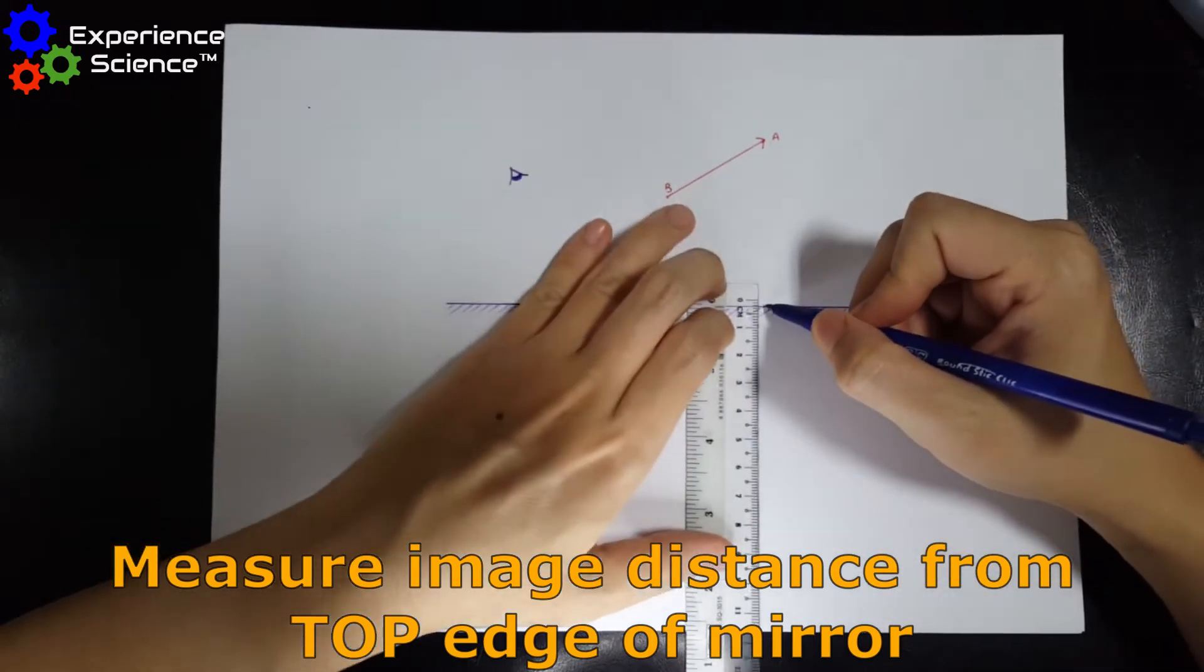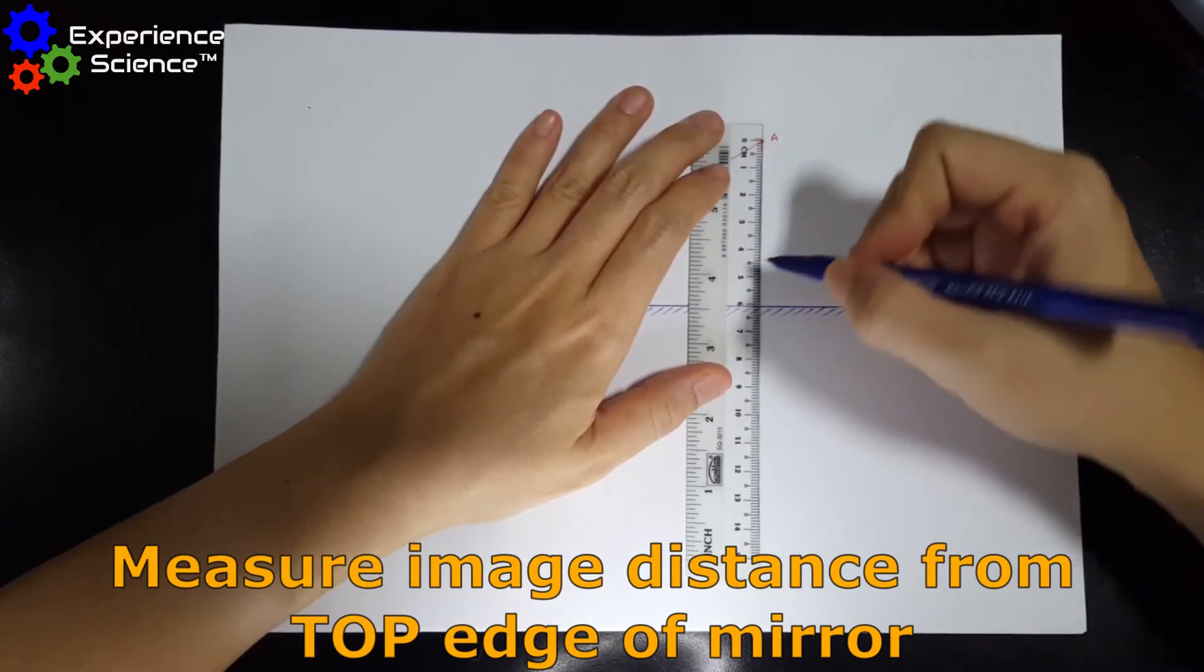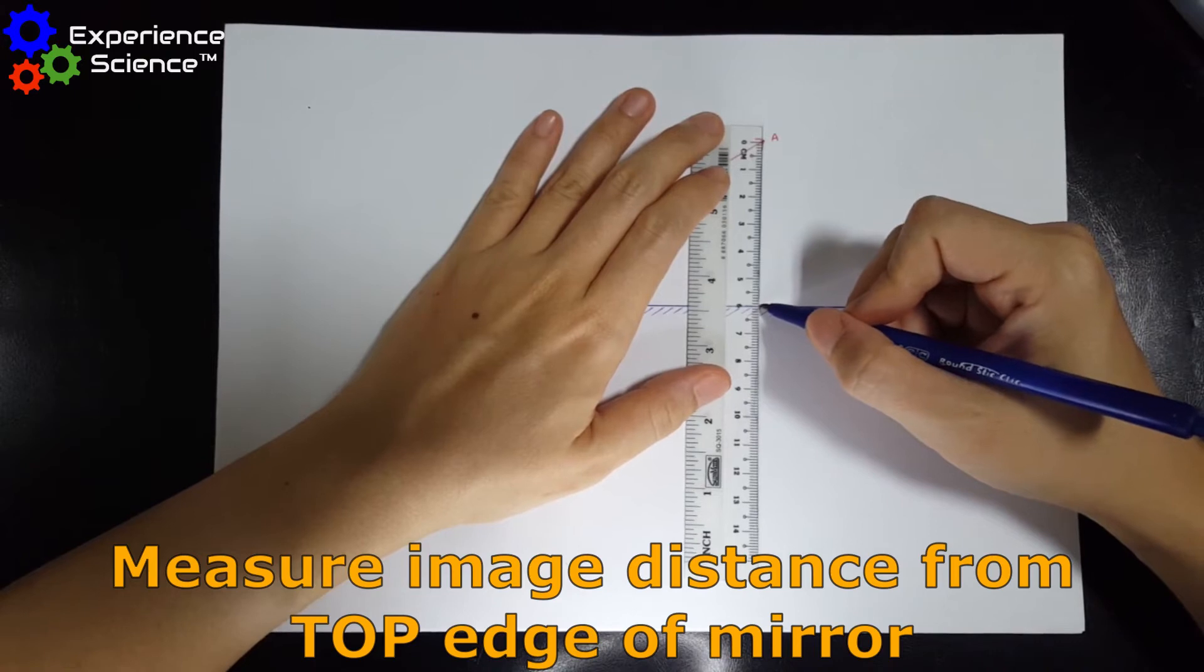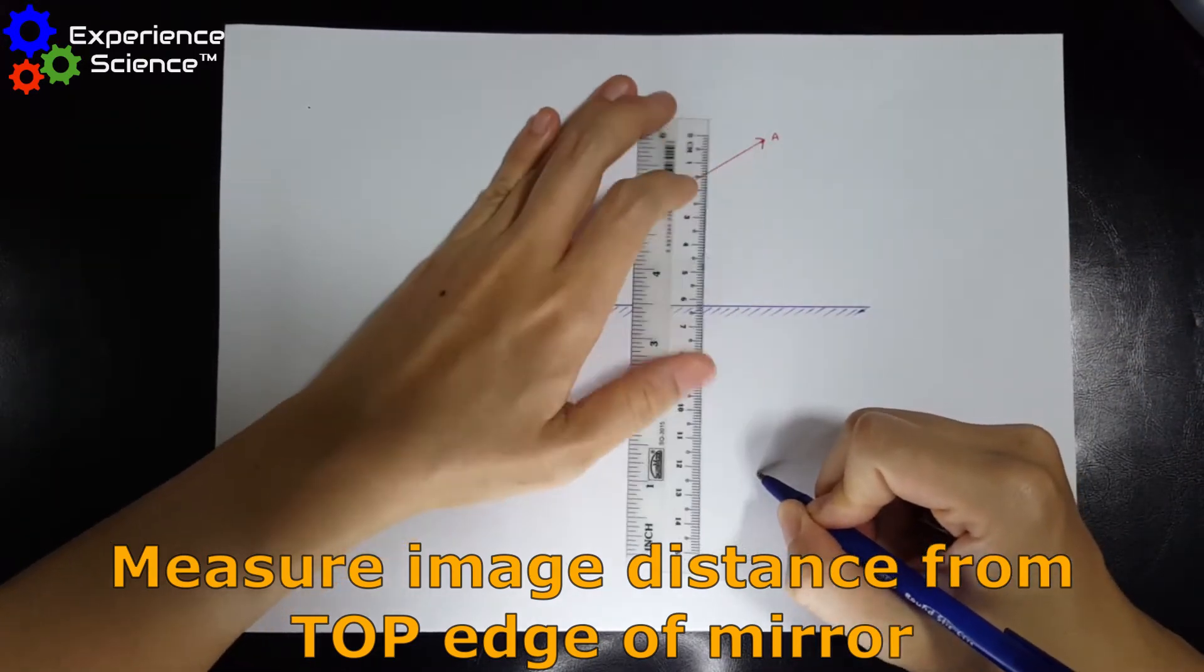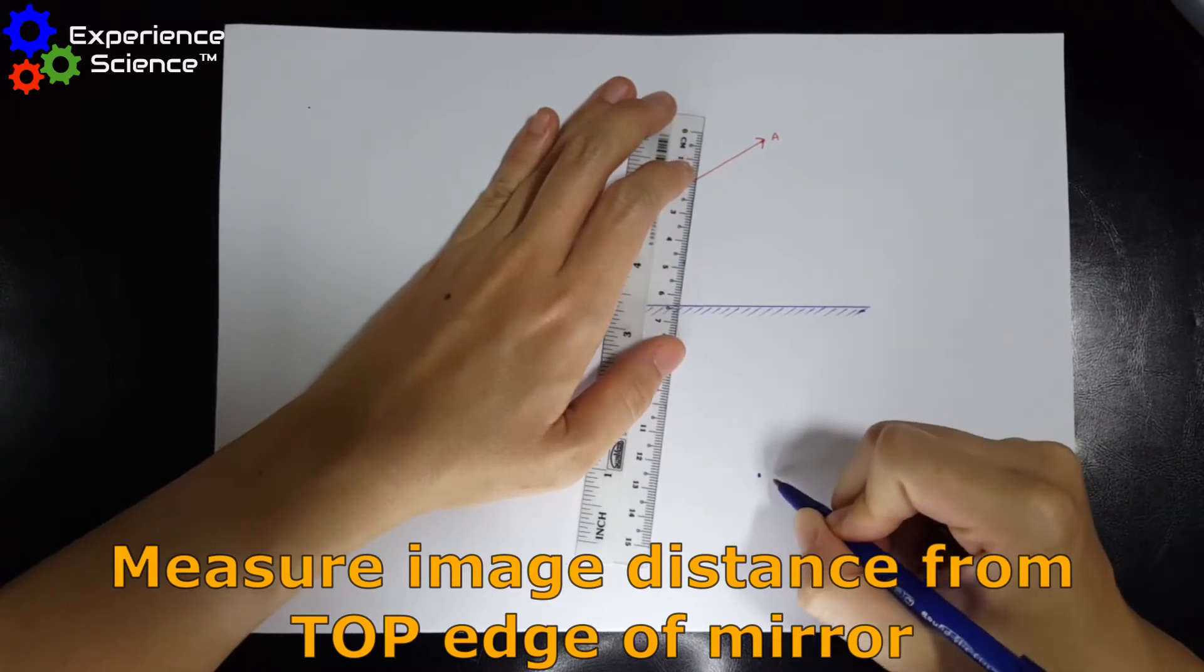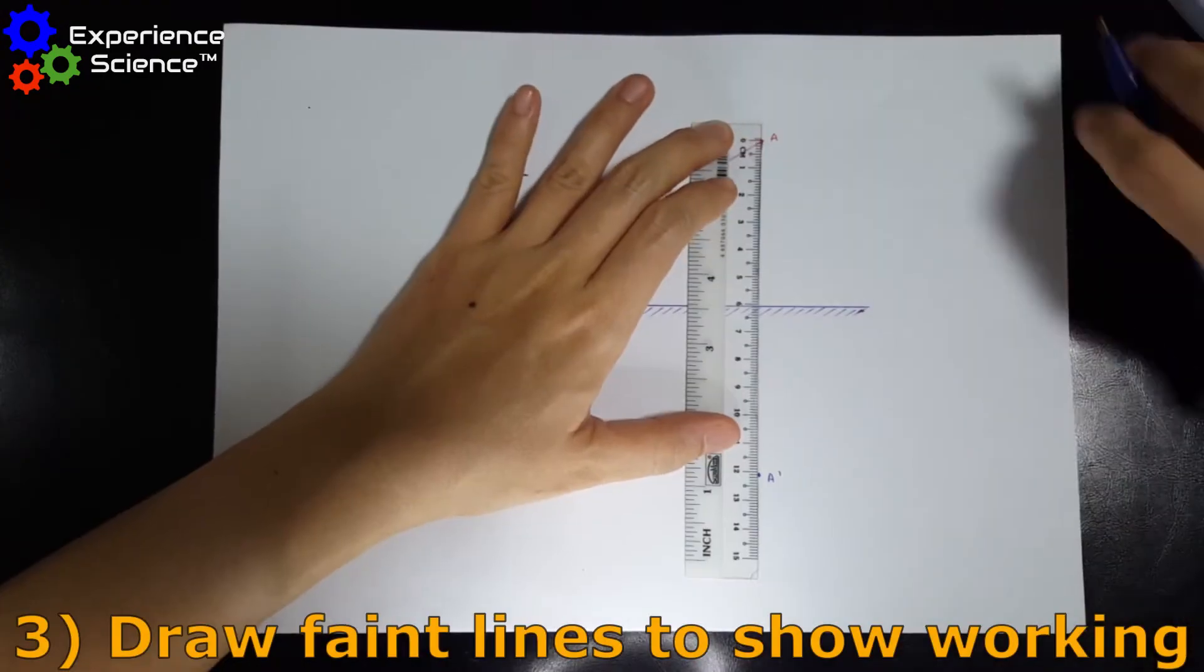So starting from here, we measure another perpendicular distance of 6 cm from this mirror and that will give us a total of 12 cm. So the image of A will be found here and we will call this A'. We have to show our working.